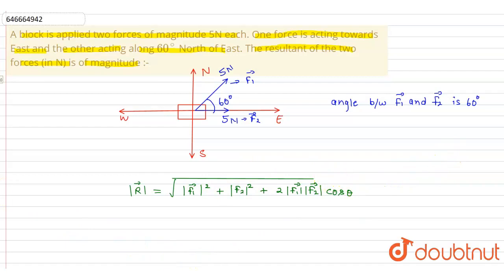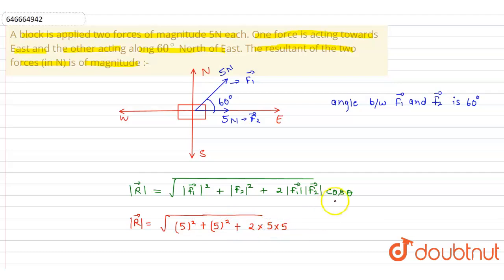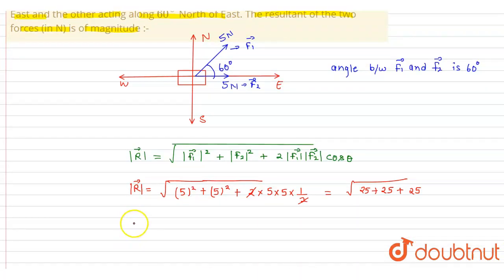Putting all values, the magnitude of the resultant vector equals the square root of 25 + 25 + 25, which gives us the square root of 75. So the magnitude of the resultant of the two forces is √75 Newton. This is our answer.